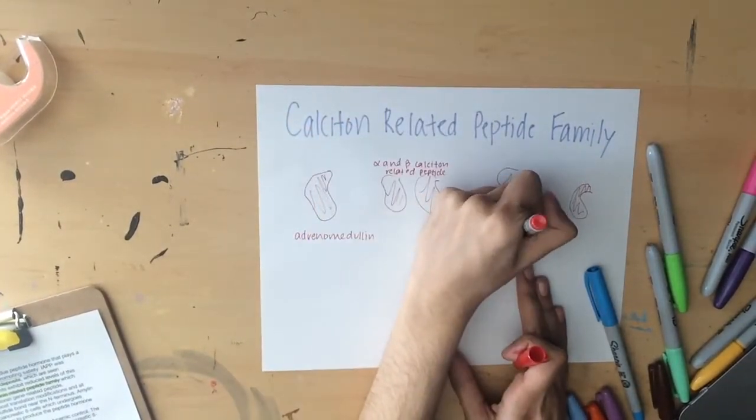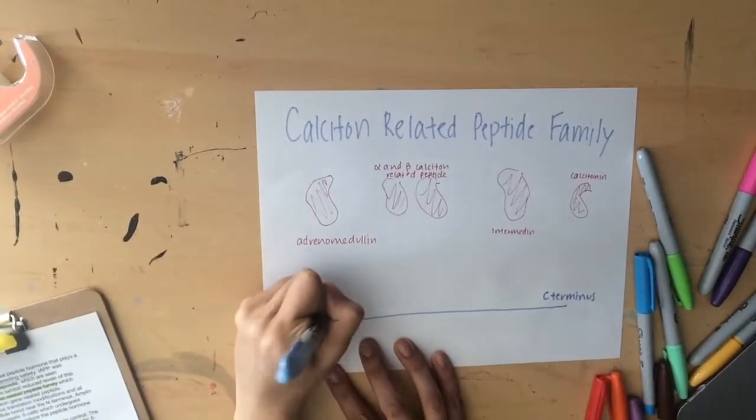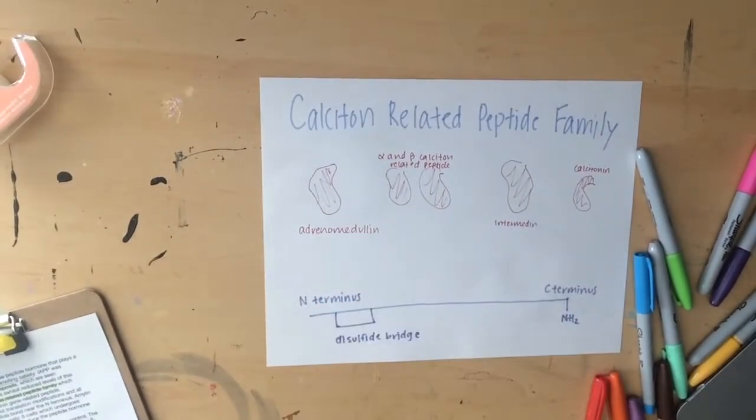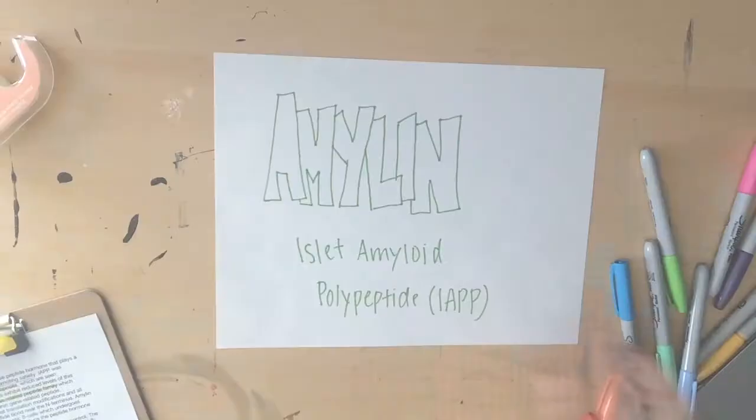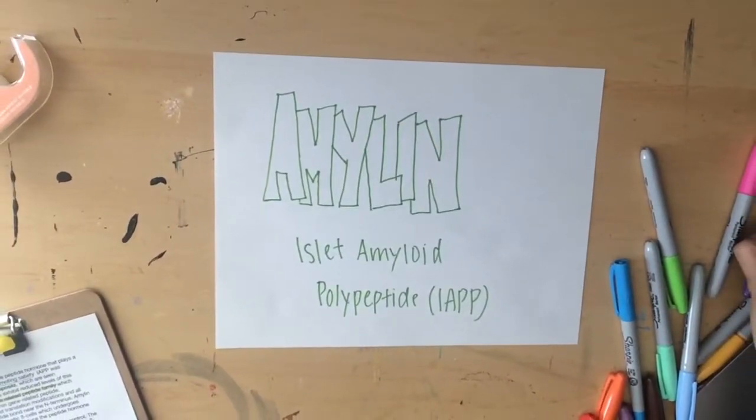These proteins all share key post-translational modifications and all have an amidated C-terminus and an intramolecular disulfide bond near the N-terminus. Amylin is processed from an 89-residue pro-protein in the pancreatic beta cells, which undergoes post-translational modifications,